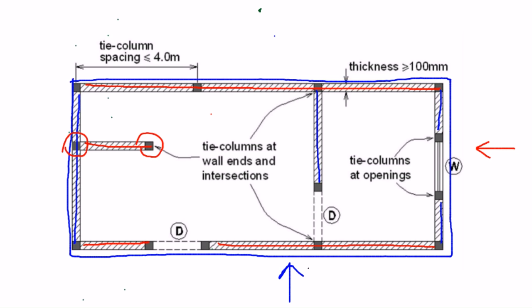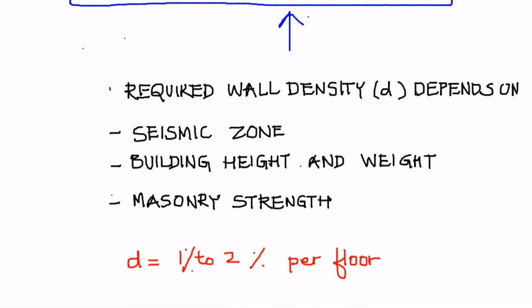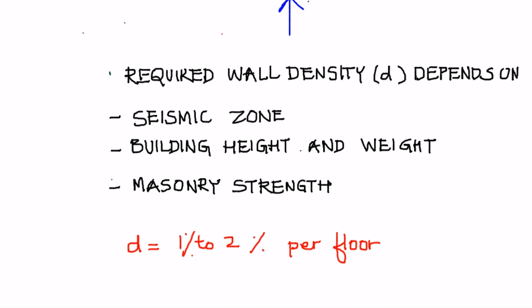If there are any unconfined walls, they would not be taken into account for wall density calculations. In general, this indicator can be used for regular buildings which are rectangular or square in shape with regular wall layout, but it can also be used for slightly irregular buildings as an indicator.